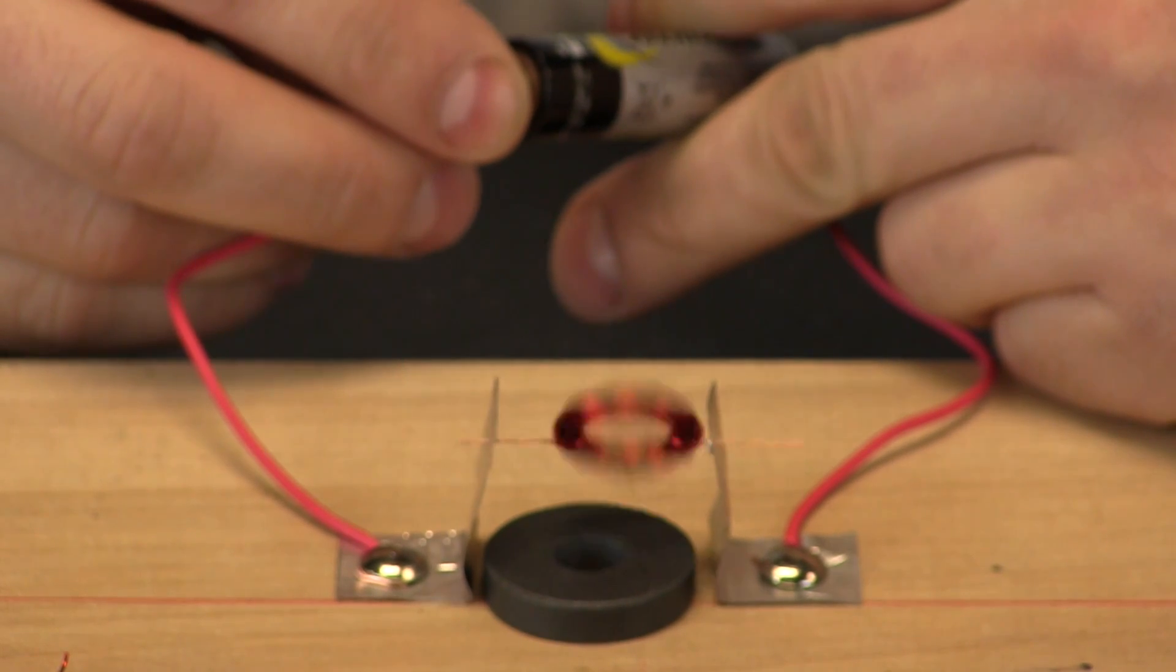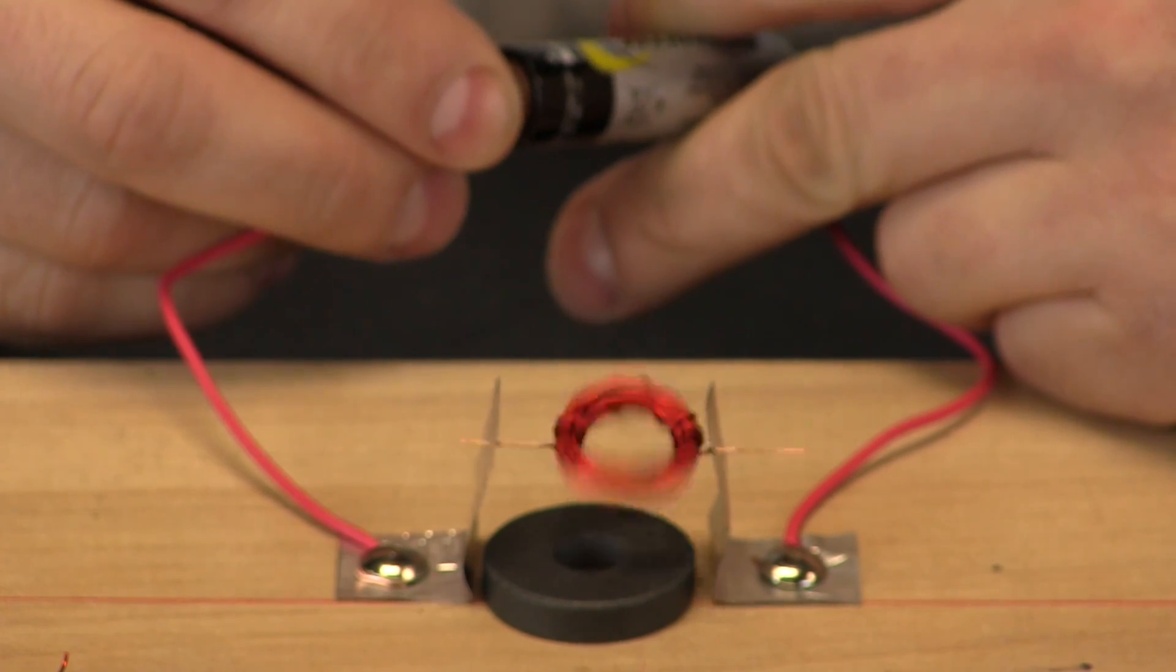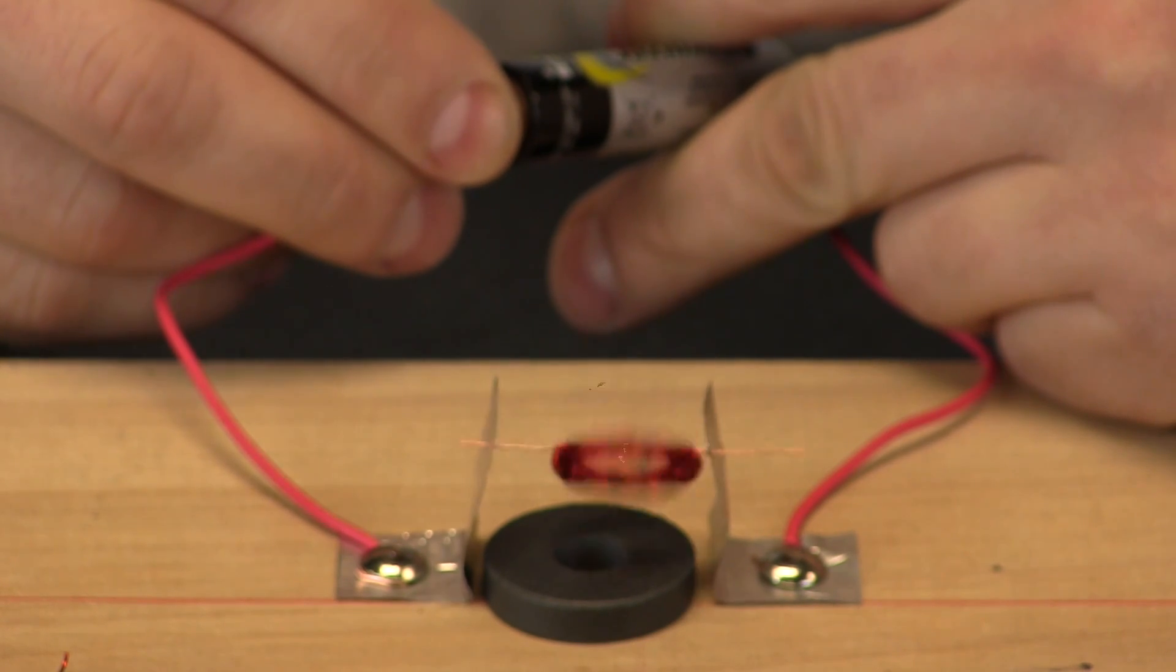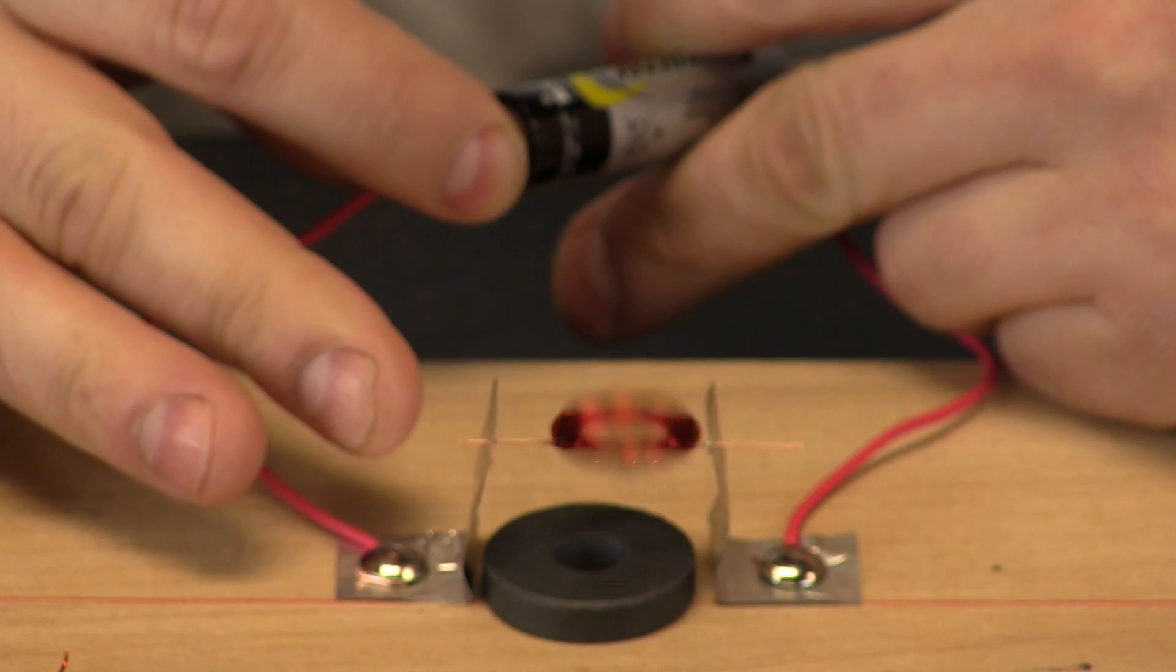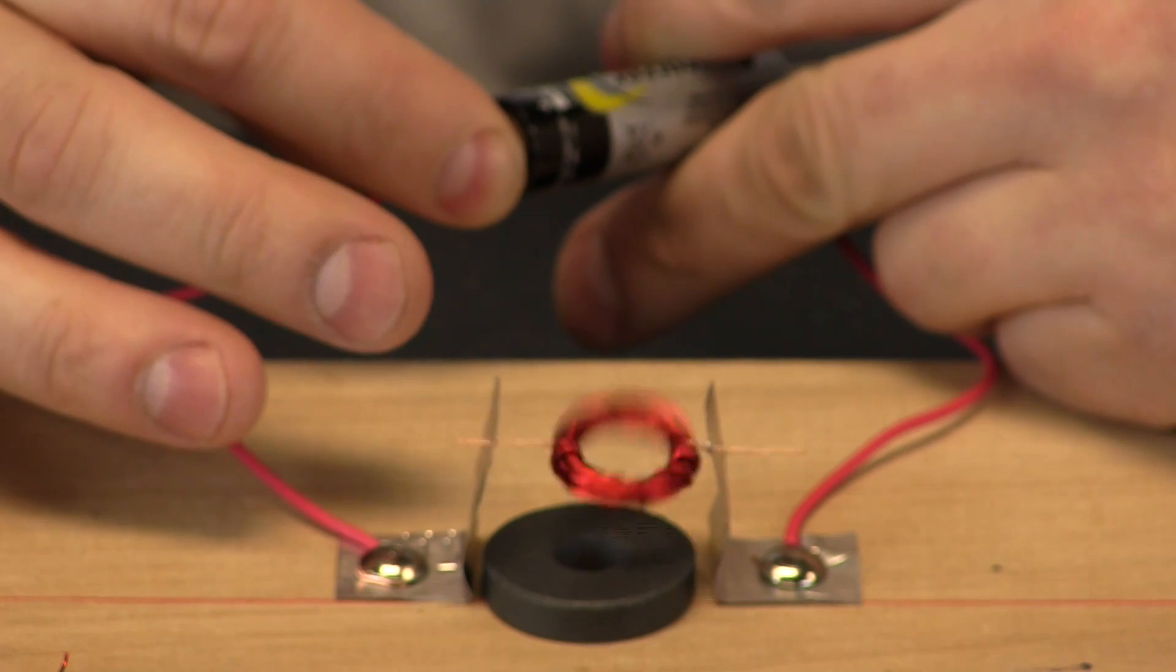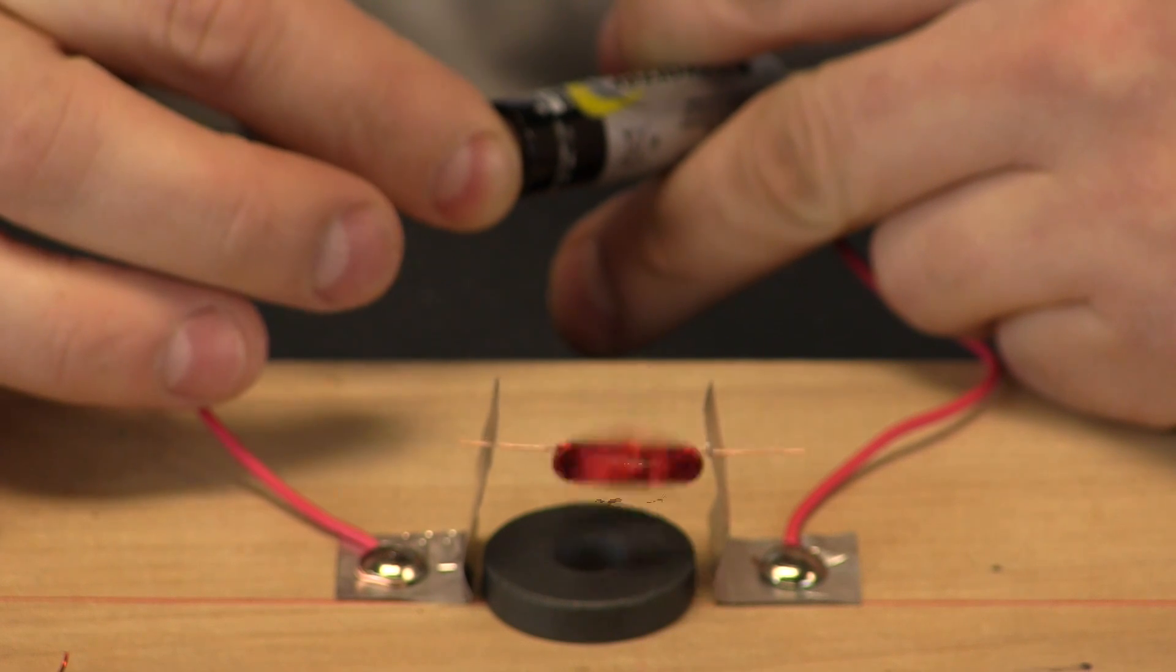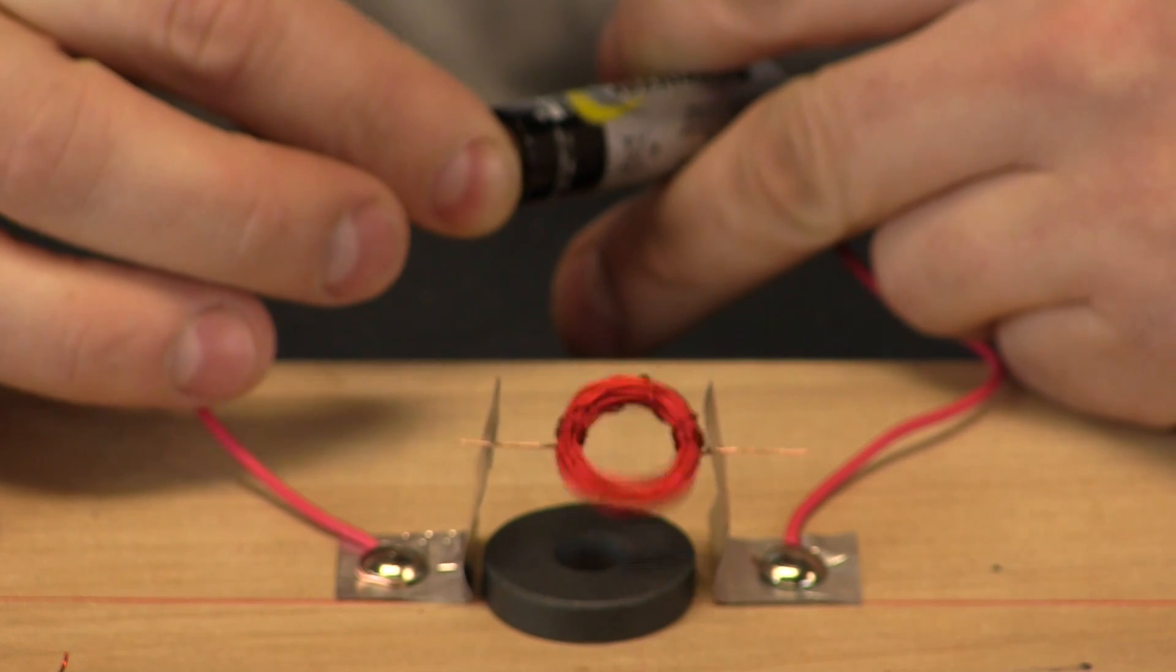What in the world is going on here? I have a few simple materials. I have a battery, I have some wire, then I have a magnet here and above the magnet is a coil of copper wire. You put all that together and I have some really cool things happening.